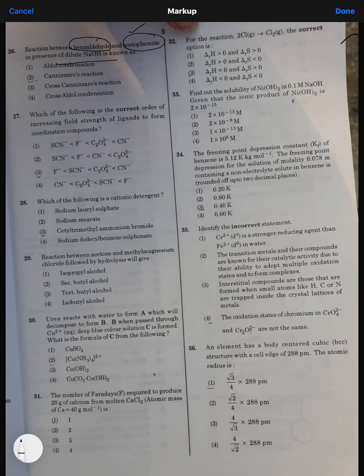Acetophenone has alpha hydrogen, so aldol condensation will be the correct answer. But it won't be aldol, it will be cross aldol condensation. Which of the following is the correct order for increasing ligand strength? Cyanide is the strongest, then oxalate, then nitrogen-containing, and fluoride is the least. Third is the correct answer.